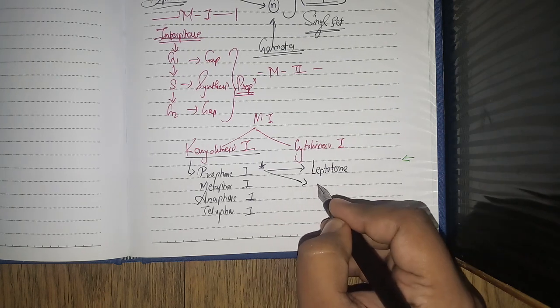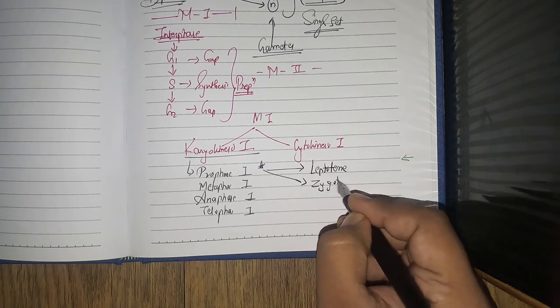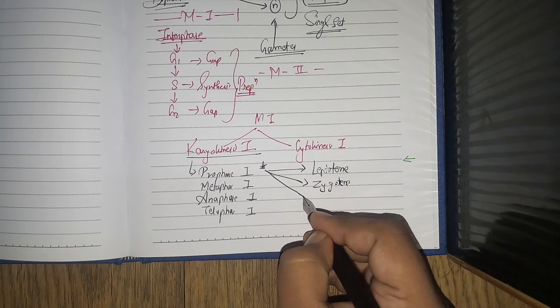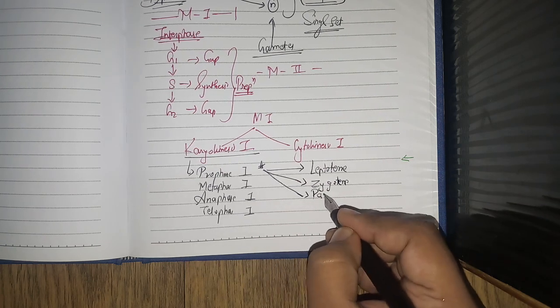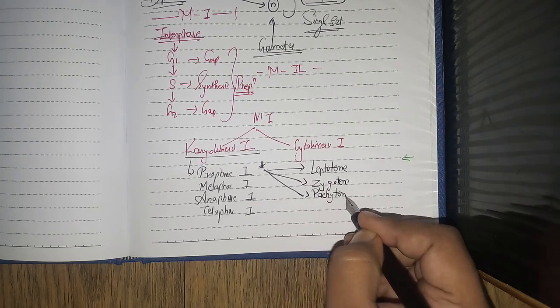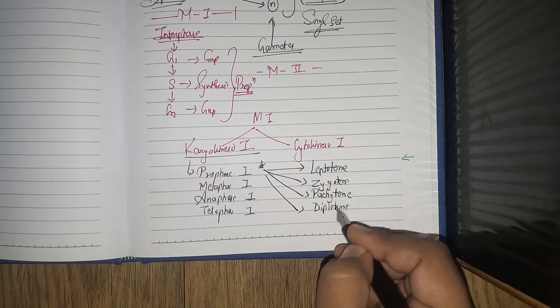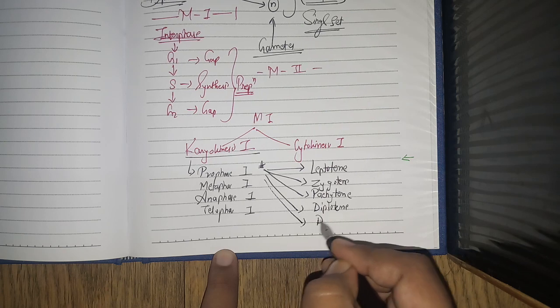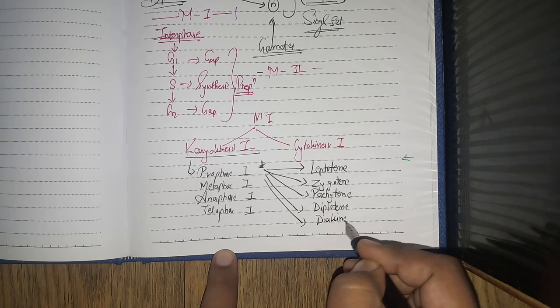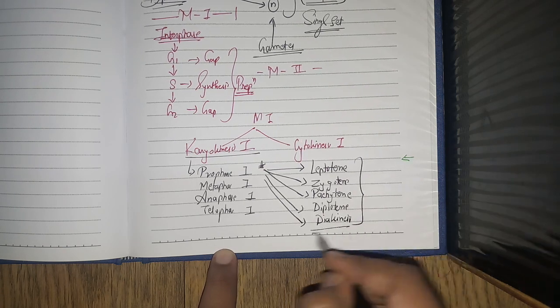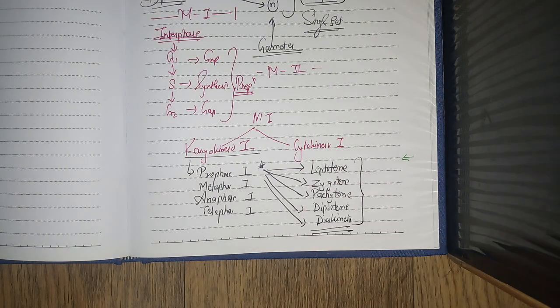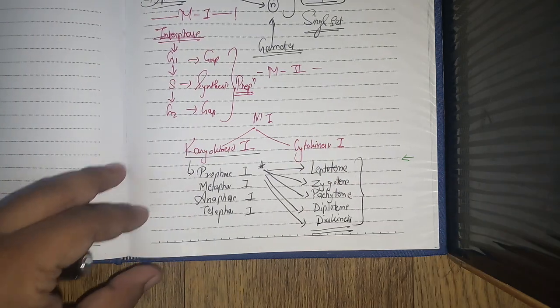The five steps of prophase 1 are: leptotene, zygotene, pachytene, diplotene, and diakinesis. And today we will cover these five, which is an important question. So are you ready? Let's start.